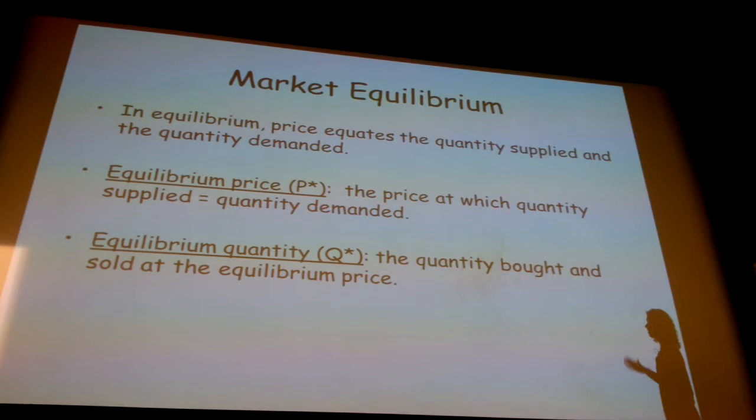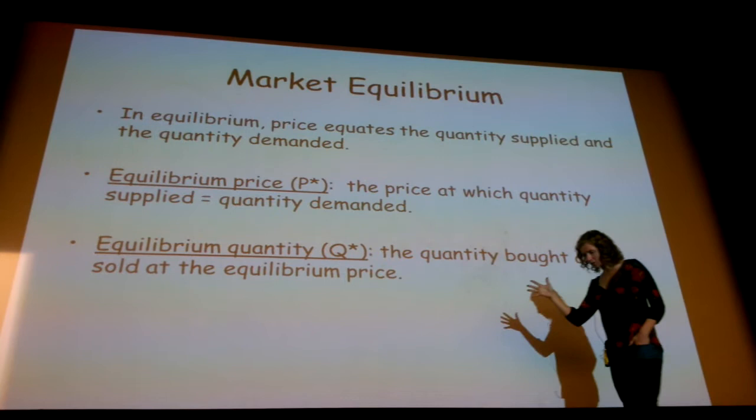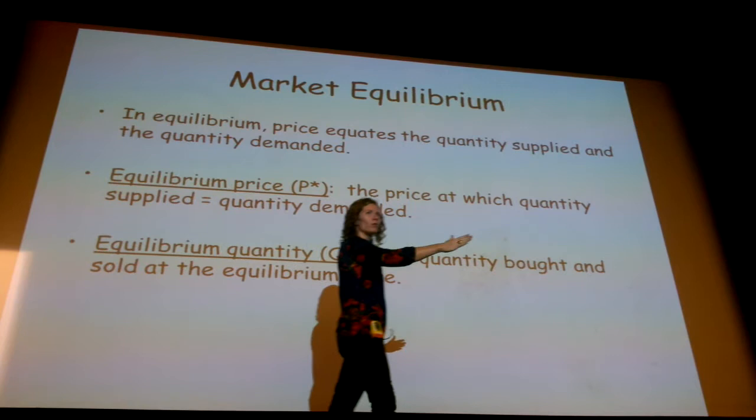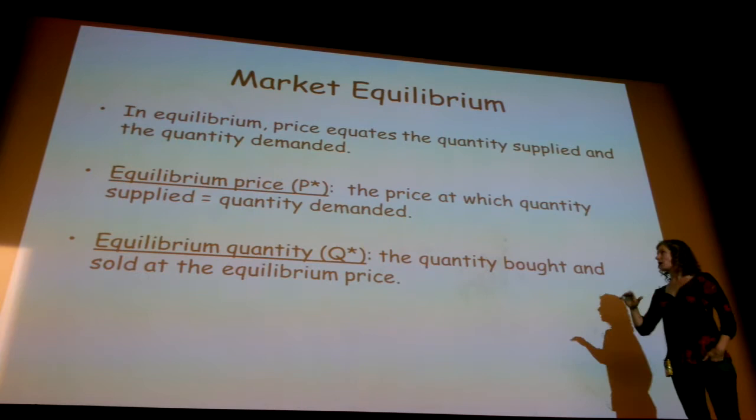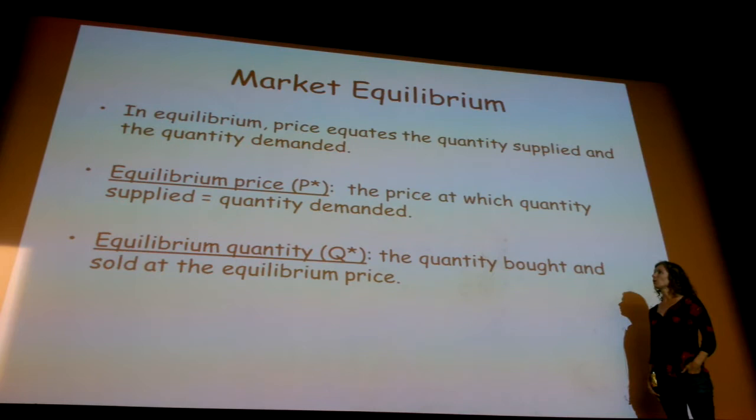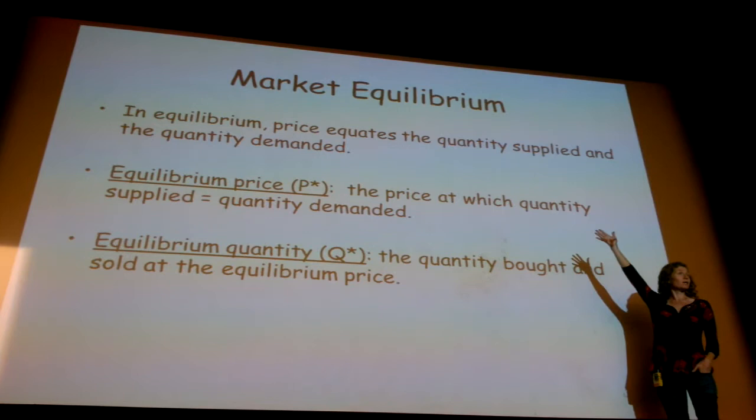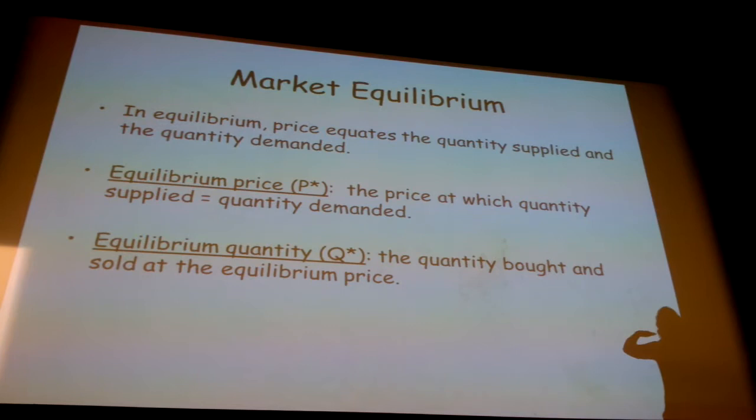In class last time on Monday, we wrapped up talking about demand and then plowed all the way through supply. We got a lot done in class on Monday, which I was excited about. And now we're ready to put supply and demand together and talk about market equilibrium. The main thing to know about equilibrium is that when a market is in equilibrium, price adjusts to equate the quantity supplied with the quantity demanded. So the equilibrium price is just the price at which the quantity supplied equals the quantity demanded. And the equilibrium quantity is the quantity bought and sold at the equilibrium price.